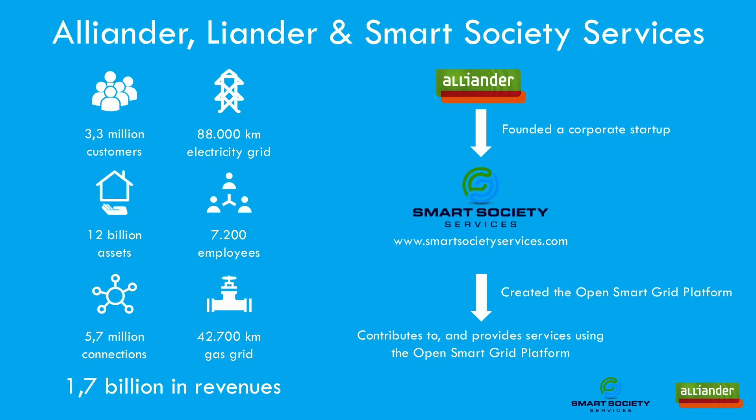Smart Society Services, founded in 2014, is an independent startup of Alliander. This company offers IoT products and services to remotely monitor, control and manage objects and devices within large infrastructures, using the OpenSmart Grid Platform as the core part of their services. Their business model is to deliver services as software as a service. One of their customers is the Alliander Digital Grid Department, which reaps the benefits of open-source while getting the convenience and warranties of a professional support and development company.